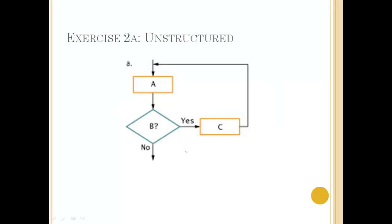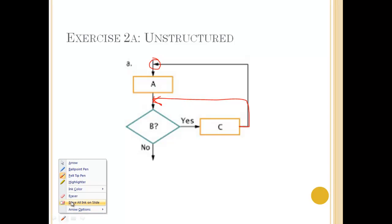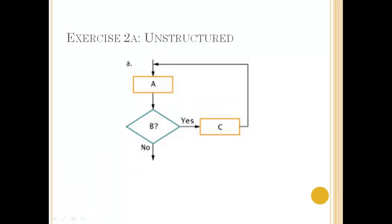Let's look at an example. Here's an example of an unstructured flowchart. Notice the first thing: the flow arrow from process C does not go where it's supposed to go. This flow arrow should go directly above the decision — it should go here. That process A that we're seeing here needs to be here. That does the priming read or initializes the sentinel value. That has to be there, but it's not part of the loop.